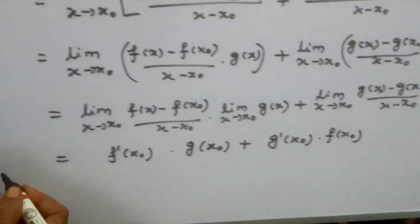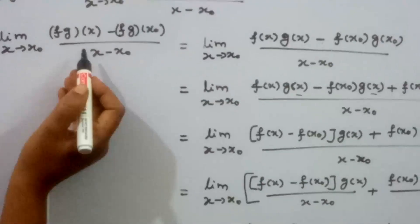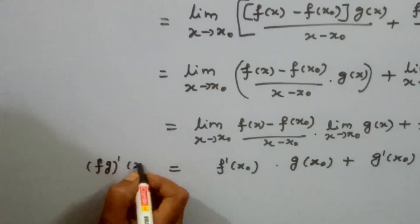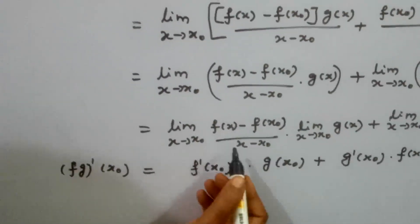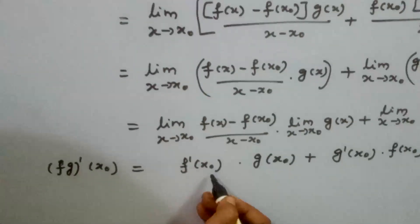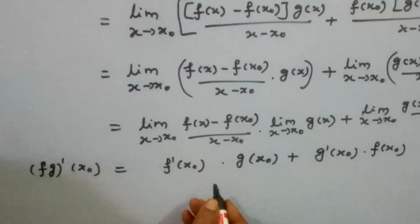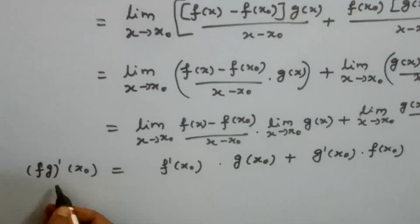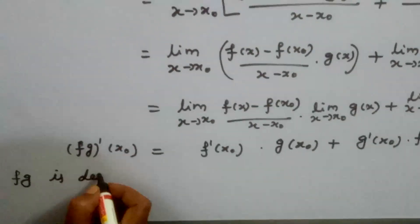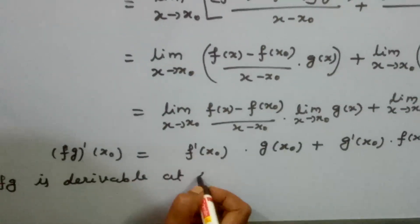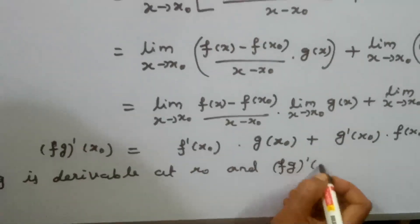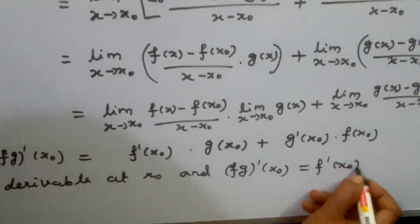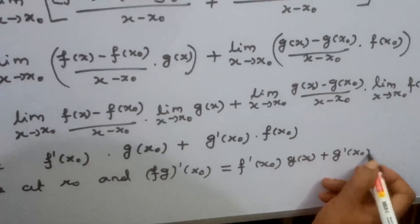Replacing the limit values: fg dash of x0 equals limit x tends to x0 of fg of x minus fg of x0 divided by x minus x0. Substituting the derivative values, this is a finite value. Therefore fg is derivable at x0, and fg dash of x0 equals f dash of x0 into g of x0 plus g dash of x0 into f of x0.